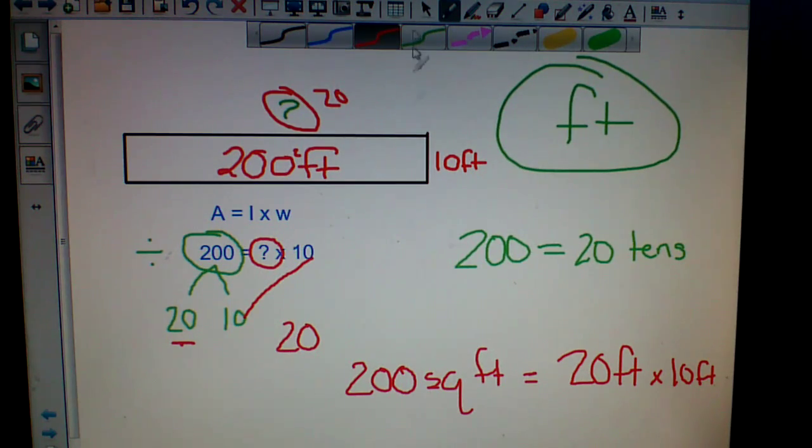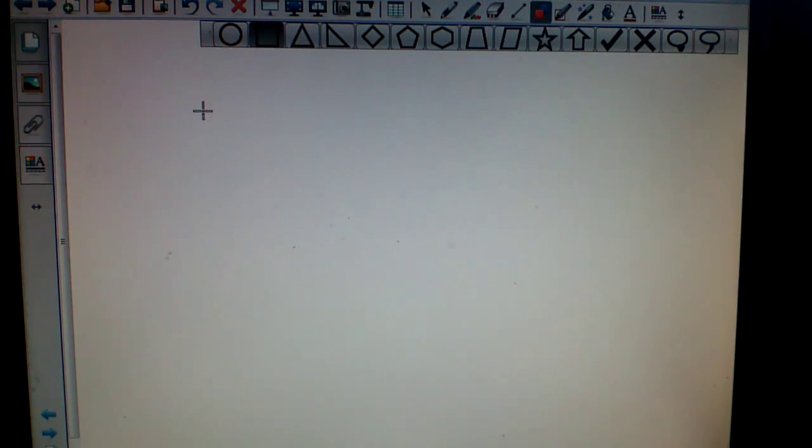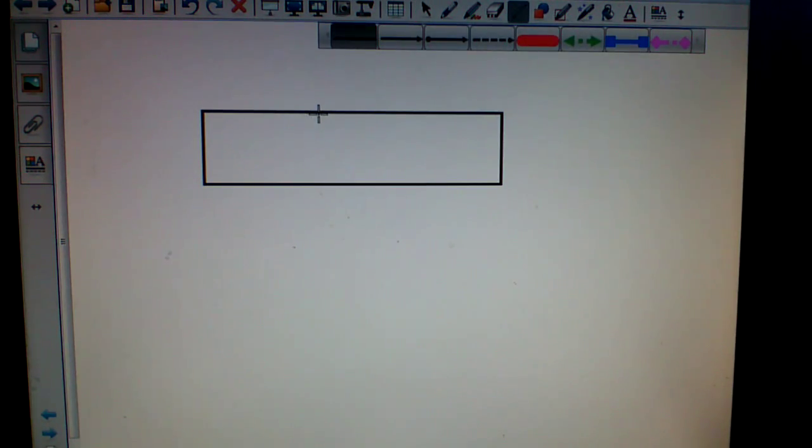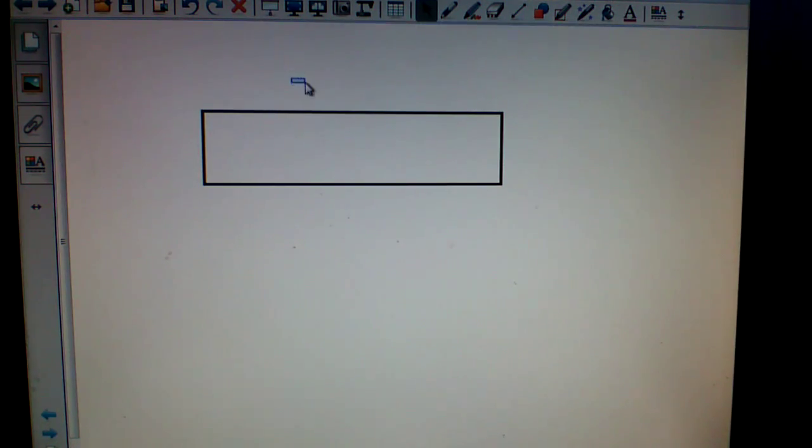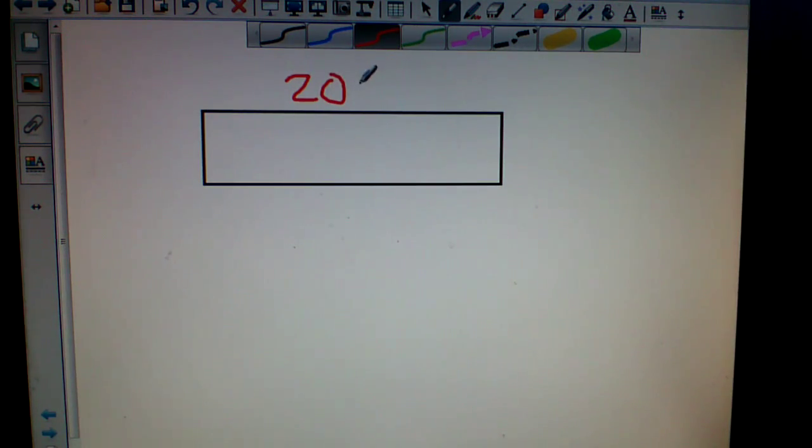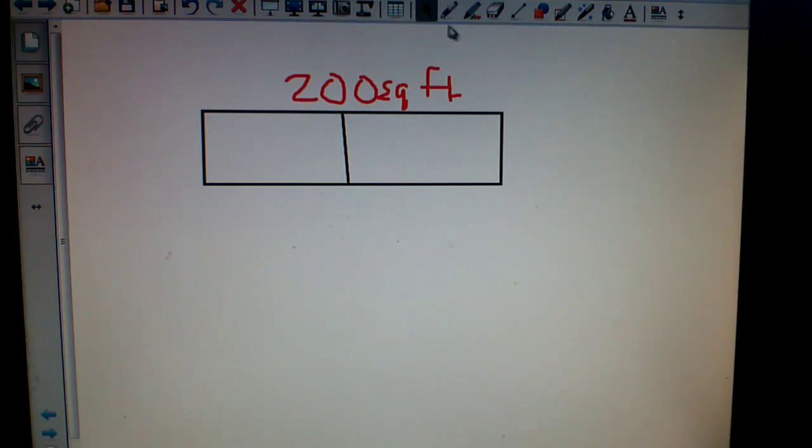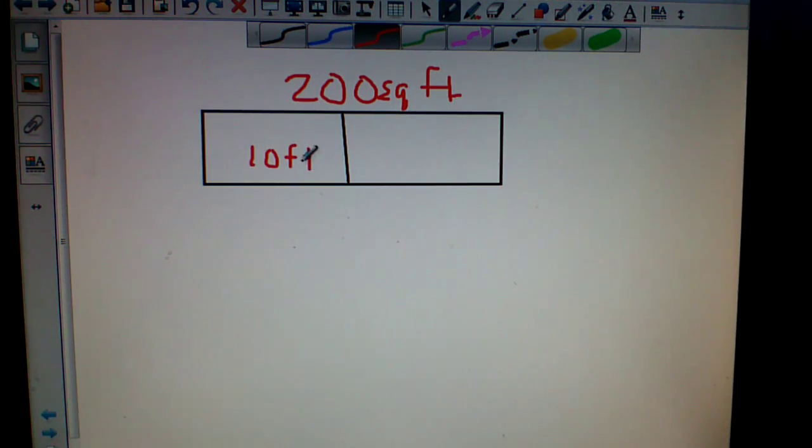Now if we were to do a tape diagram, which I know you guys love, you can do it like this. If you have the whole thing is 200 square feet, and then you know that one piece of it is 10 feet, you're looking for this. So that's how you would do it if you're doing tape diagramming. You would be looking for this little piece here.